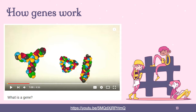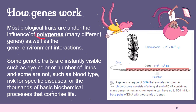Most biological traits are under the influence of polygenes — many genes — as well as gene-environment interactions. You may have the gene, but its manifestation is directed by the environment. Some genetic traits are instantly visible, such as eye color and number of limbs, but some are not — like your blood type, your risk for specific diseases, whether you are a carrier of a disease, and the thousands of basic biochemical processes that make up life, including metabolic rates and hormone and muscle formation.